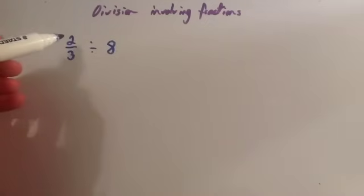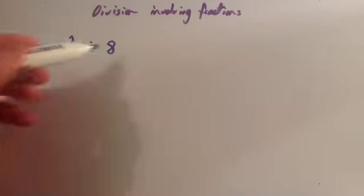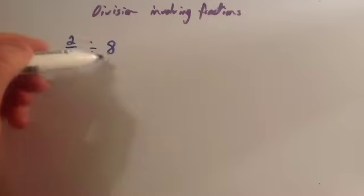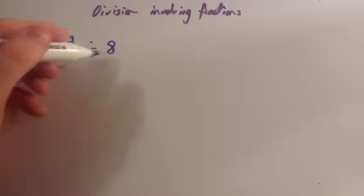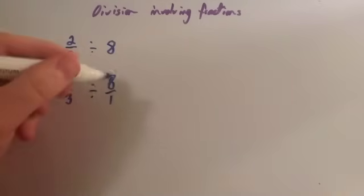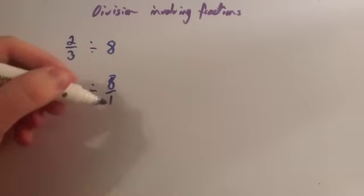Okay, let's look at another example. We're now going to do two thirds divided by 8. Well, as always, you want to take the reciprocal of the second fraction. So 8 is the same as 8 over 1. I want to take the reciprocal of this, so that means you're going to flip it over.